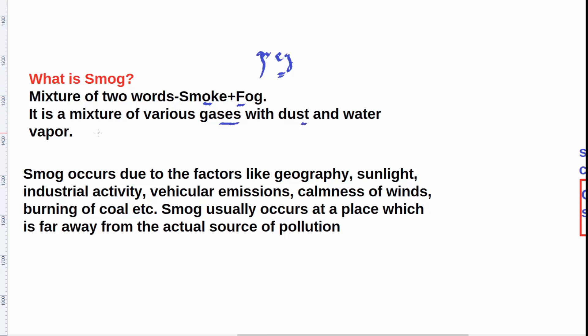It occurs due to factors like geography, sunlight, industrial activity, vehicular emissions, calmness of winds, burning of coal, etc. It usually occurs at a place which is far away from the actual source of pollution. And that is why stubble burning in the adjoining states impacts the air in Delhi.